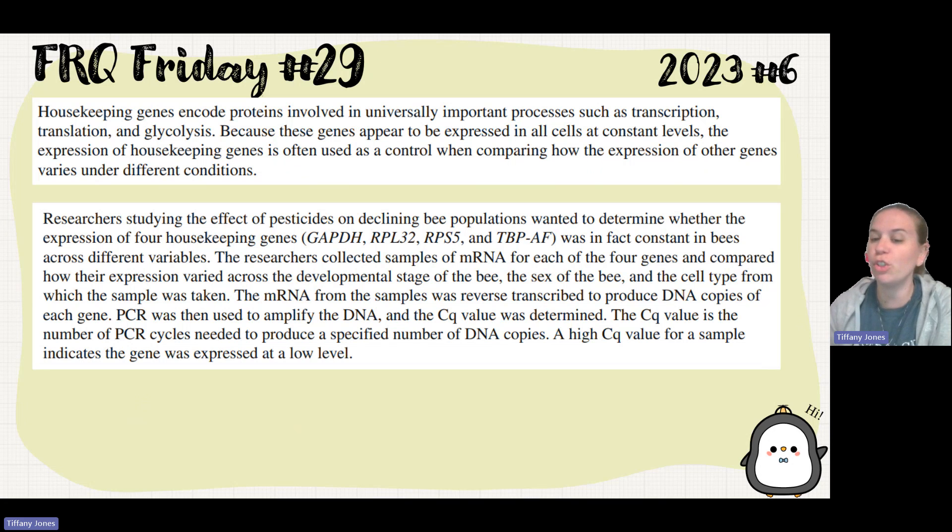The mRNA from the samples was reverse transcribed to produce DNA copies of each gene. PCR was then used to amplify the DNA, and the Cq value was determined. The Cq value is the number of PCR cycles needed to produce a specific number of DNA copies.